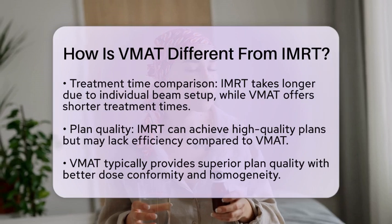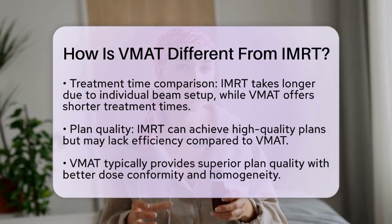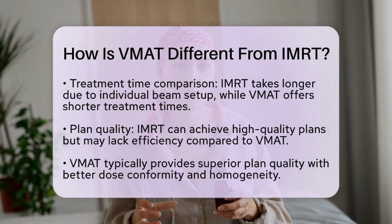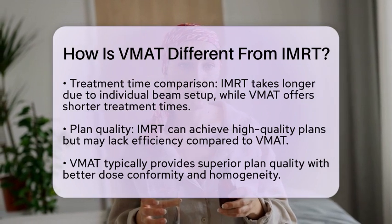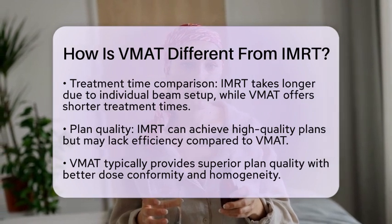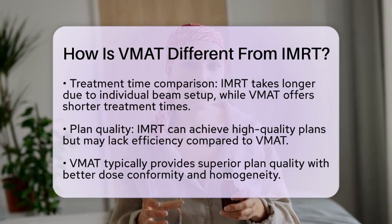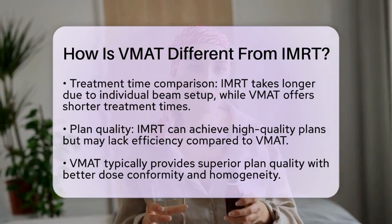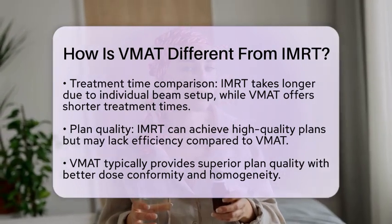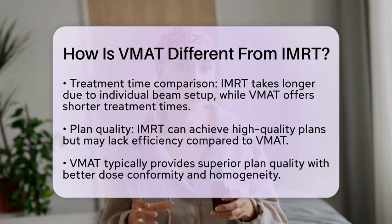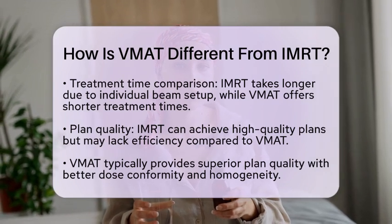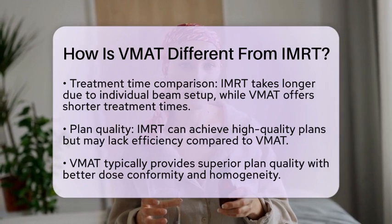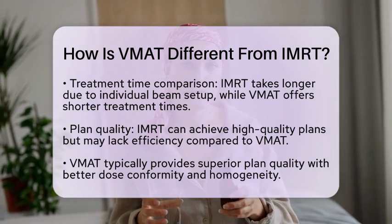When it comes to plan quality and efficiency, both techniques have their strengths. IEMRT can achieve high-quality plans with a larger number of beams, but it may not always be as efficient as VMAT. VMAT typically provides superior plan quality with improved dose conformity and homogeneity. This is especially important when treating tumors near critical organs, as VMAT can minimize exposure to surrounding tissues.